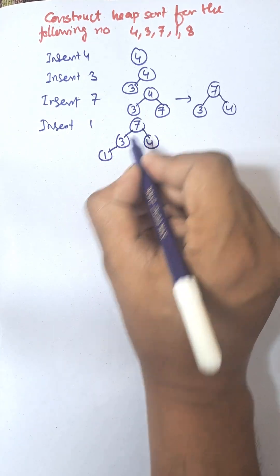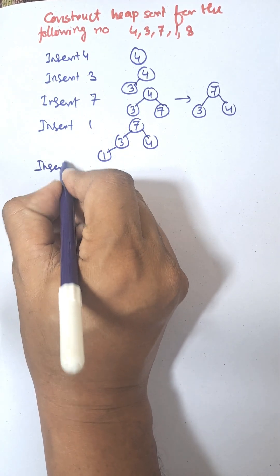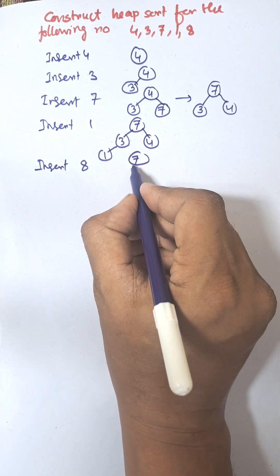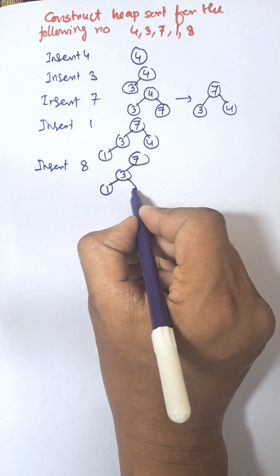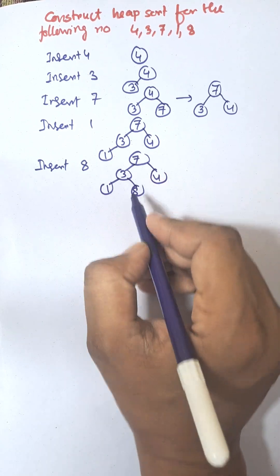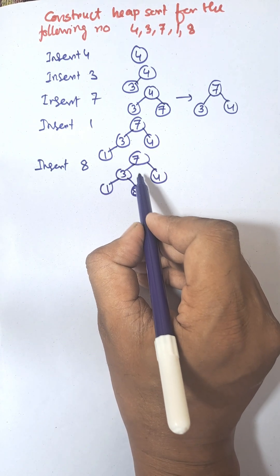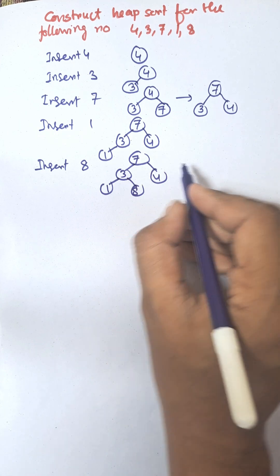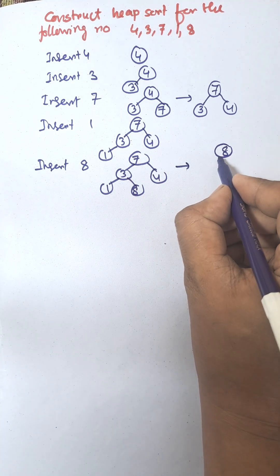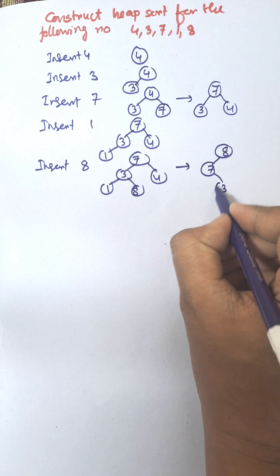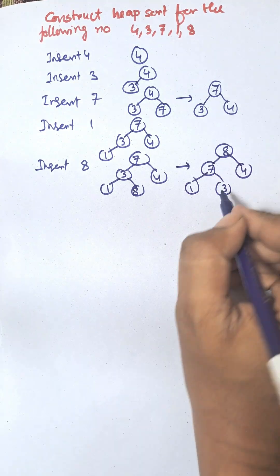We need to construct the complete binary tree — left, right, left, right and so on. Insert 8 on the right-hand side of 3. Now the first swap will be between 3 and 8.